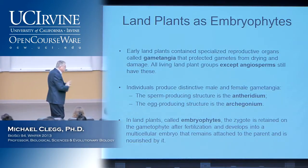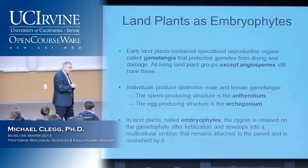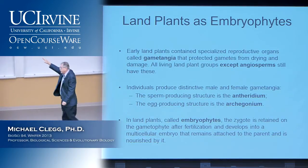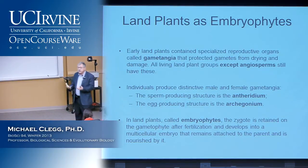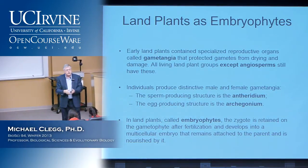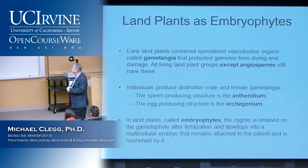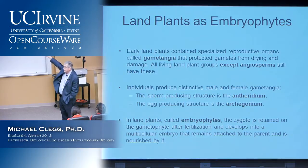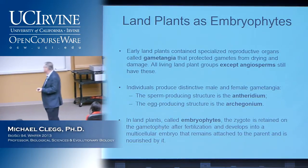The solution in part to the reproduction problem is to carry out the process of producing gametes in specialized structures. These specialized structures have a name — they're called gametangia. All plants except the flowering plants have gametangia; those structures are replaced by the flower in flowering plants.